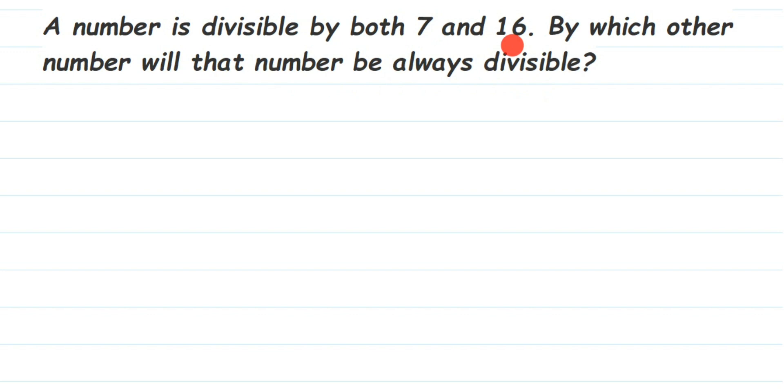Divisible means there's one number which can divide both 7 and 16. Divide means when you divide this number, the remainder has to be 0 - it should be completely divisible.